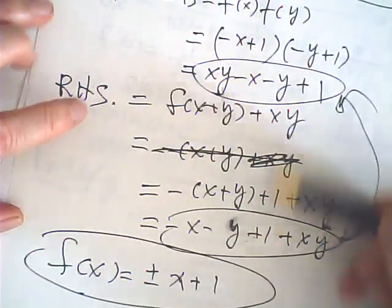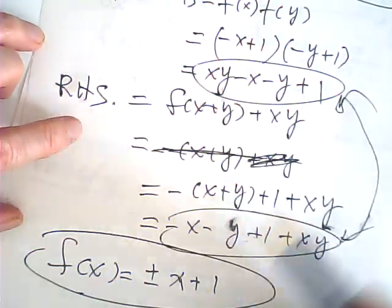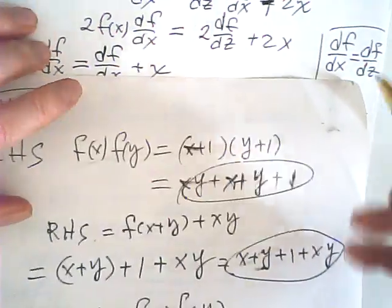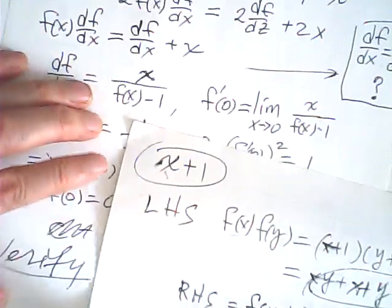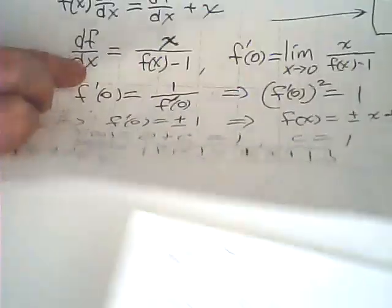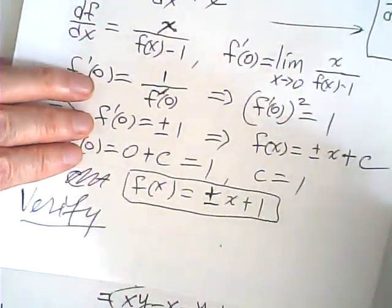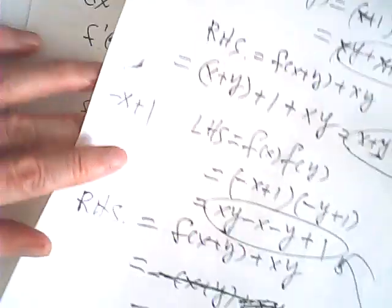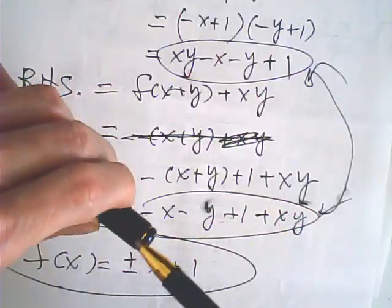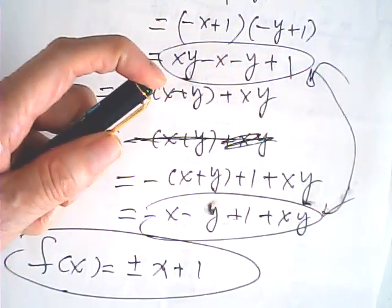Both solutions satisfy the original equation, so they are valid solutions. If during verification they had not been equal, we would need to search for other solutions. But in this case both work. The function is linear. I hope this makes sense and I hope you like it. Thank you.